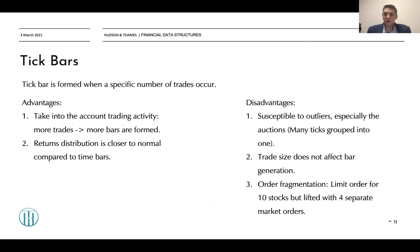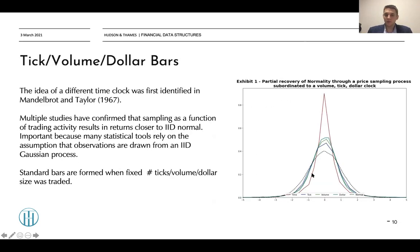This is the idea of tick bars. A tick bar is formed when a specific number of trades occur. For example, a tick bar of size 100 would sample a bar when 100 trades pass. The first advantage is that this is the first step to taking trading activity into account — more trades means more market activity and more bars are formed. As we can see from the plot, the return distribution of tick bars (the blue line) is much closer to the normal distribution compared to time bars.